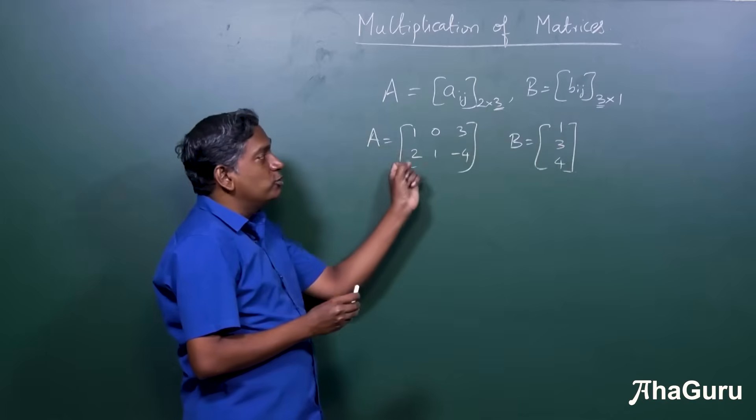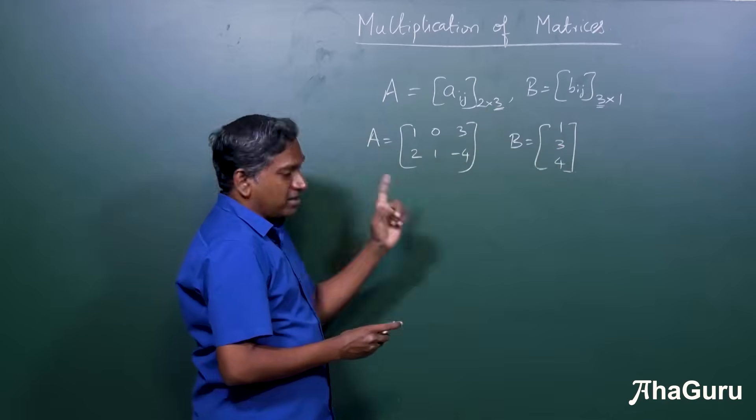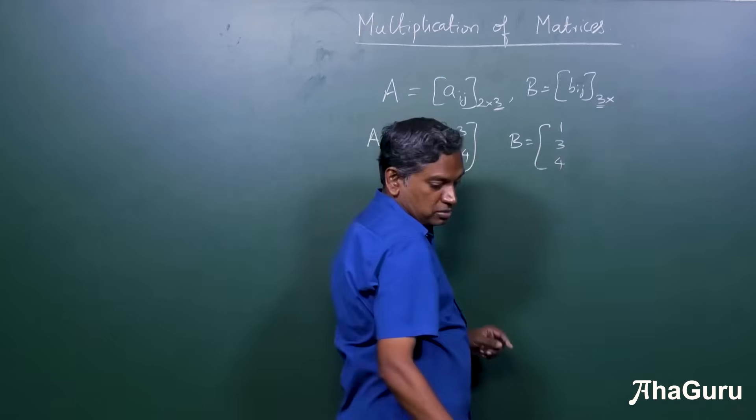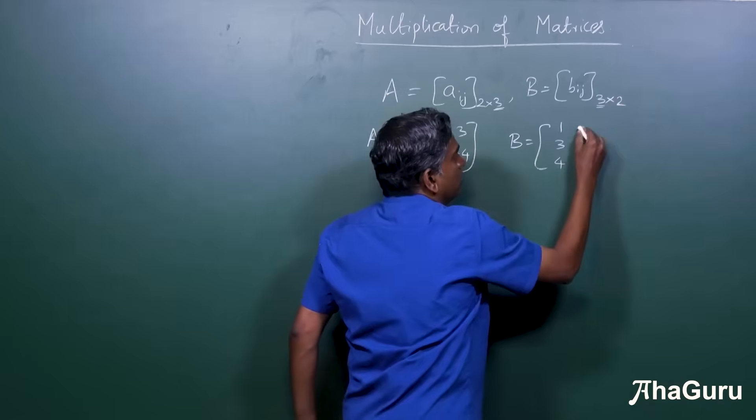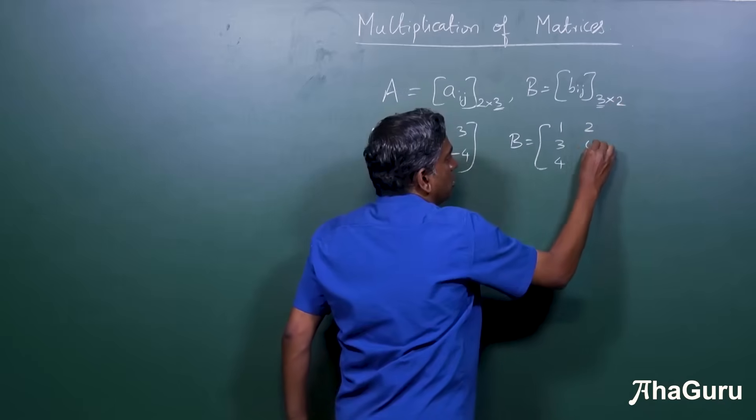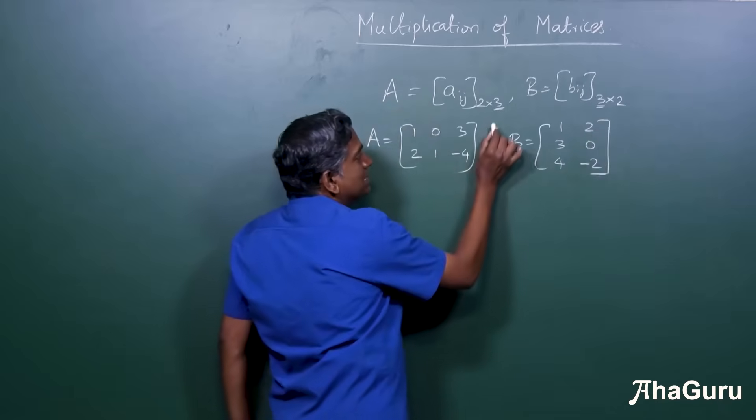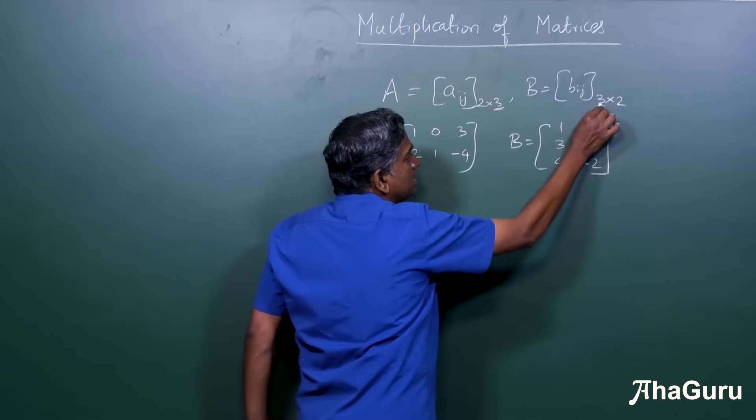Now, the way we are going to multiply, okay, in fact let me just not make it 3 by 1, let me make it 3 by 2. Okay, 3 by 2, which means there will be one more column.